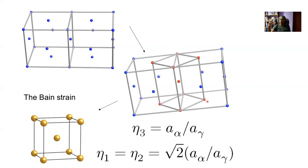That is the Bain strain, and there are many experiments which show that this is the best way to achieve the deformation — it involves the smallest displacements. The experimental proof is that when the atoms in the austenite are ordered, we expect this deformation and no other to produce this kind of transformation. This deformation carries the austenite into the martensite and indicates that the orientation relationship should be very simple: the 001s of the two lattices are parallel, and 100 of the ferrite is parallel to 1-bar10 of the austenite.